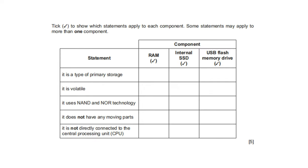Check to show which statements apply to each component; some statements may apply to more than one. The first statement: it is a type of primary storage — RAM is a type of primary storage. Next: it is volatile — RAM is volatile, while SSD and USB are not volatile.